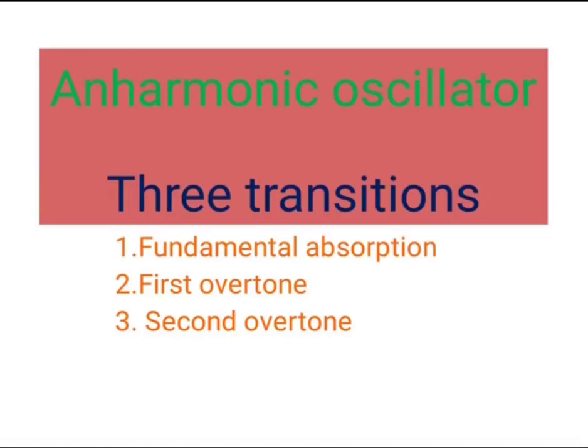In today's lecture we are going to see the three transitions found in the anharmonic oscillator. The anharmonic oscillator is an oscillator which does not obey the rules of the simple harmonic oscillator, and when we apply either stretching or compression to the bond, it will undergo dissociation and the molecule will get split into atoms.